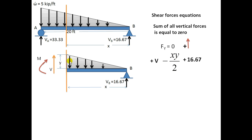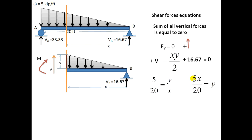V1, the UVL downward, and 16.67 upward — their sum equals zero. To find Y, I use the slope method. The total UVL intensity is 5 and the total span is 20. Dividing 5 by 20 gives the slope value, which equals Y divided by X. So Y = 5X/20.